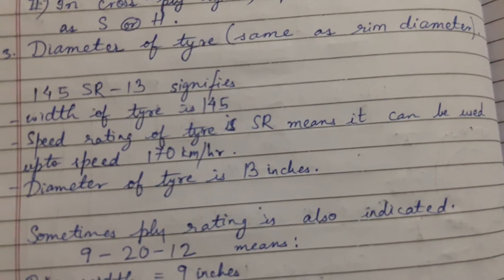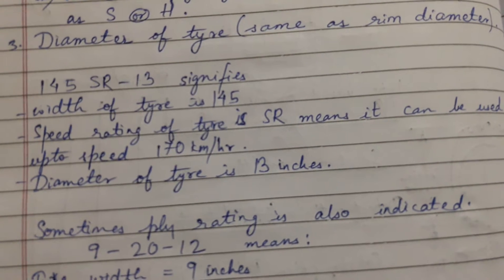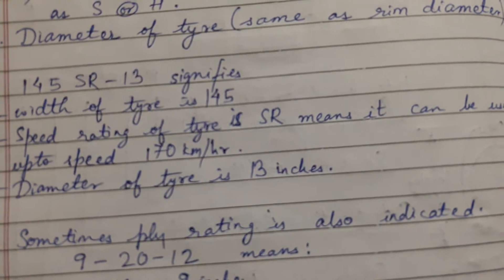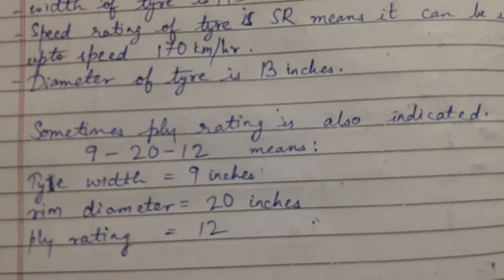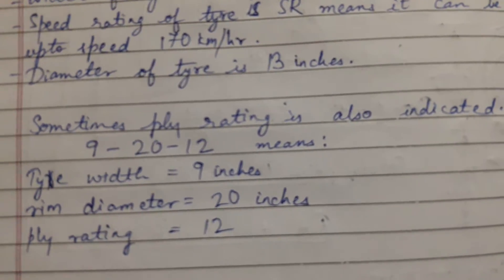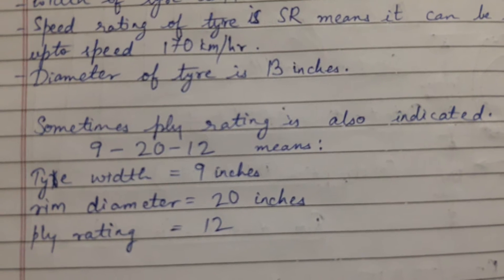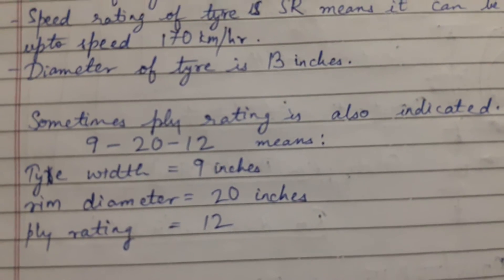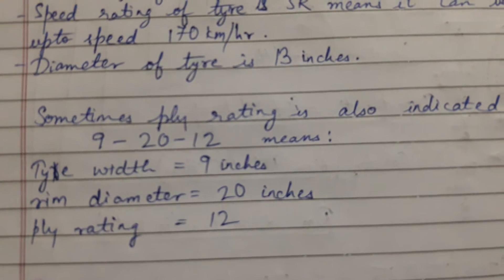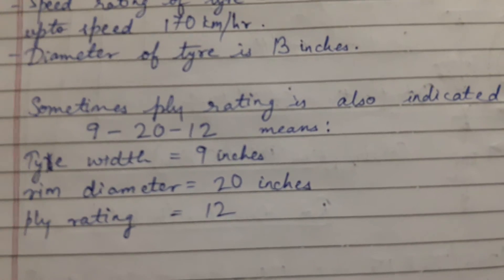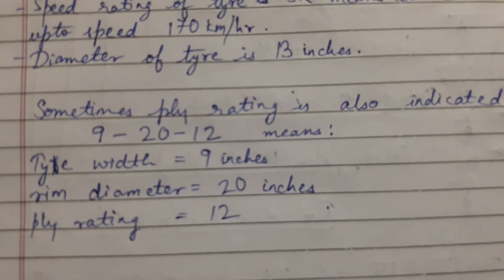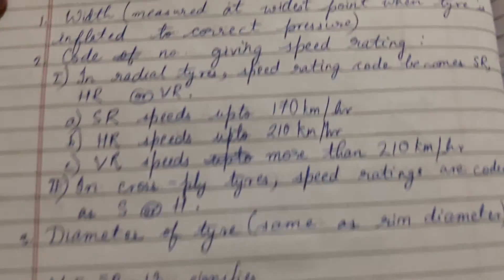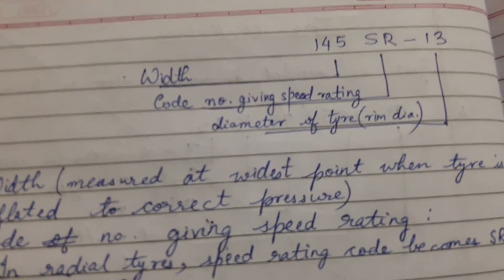Our example, 145 SR 13, signifies: width of tire is 145 mm, speed rating SR means it can be used up to 170 km/h, and the rim diameter is 13 inches. Sometimes ply rating is also indicated — for example, 9 20 12 means tire width 9 inches, rim diameter 20 inches, and ply rating 12.